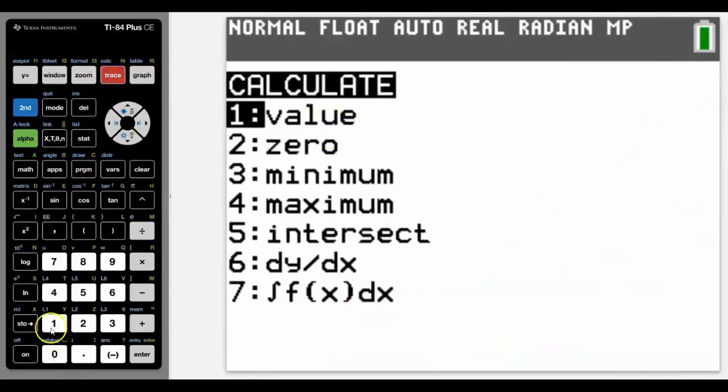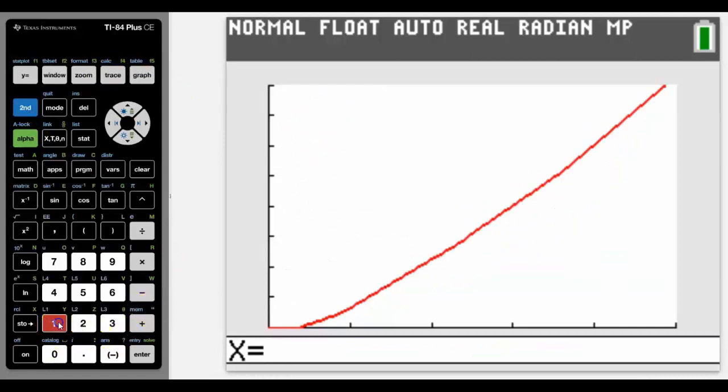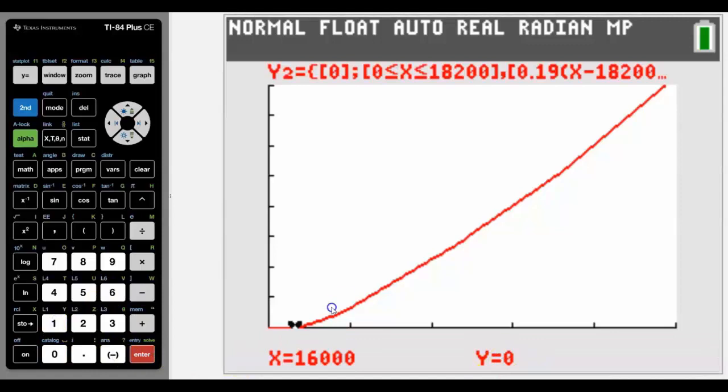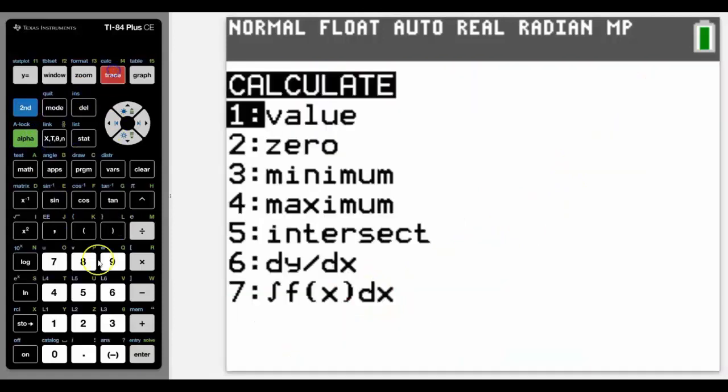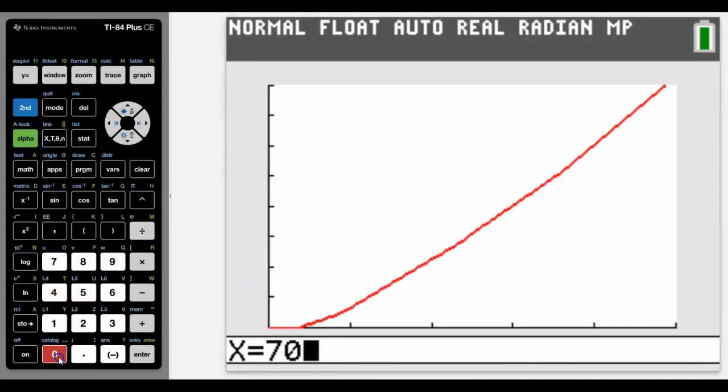Remember, if we earn anything less than $18,200—let's say $16,000—we pay no tax. But these are all linear parts, just broken up with the piecewise.